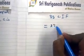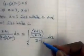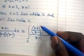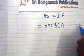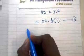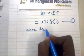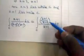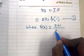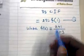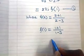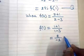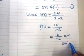By Cauchy's integral formula, the result is 2πi times f(a), where a = 1. So we need f(1). Since f(z) = (z+1)/(z−3), we get f(1) = (1+1)/(1−3) = 2/(−2) = −1.